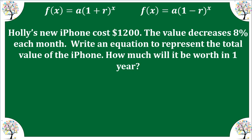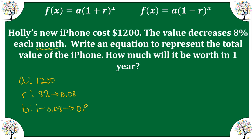Holly's new iPhone costs $1,200. The value decreases 8% each month. Write an equation to represent the total value of the iPhone. The initial value is $1,200. The rate is 8%, which is 0.08. Our b value, or decay factor, is 1 minus 0.08, which gives us 0.92. The equation is F(x) equals 1,200 times 0.92 raised to the x, and this time x is in months.